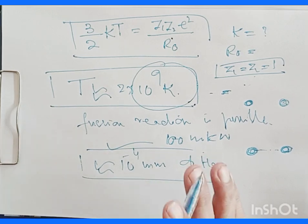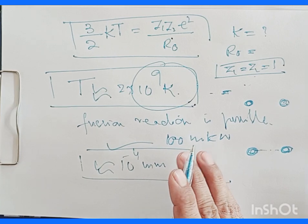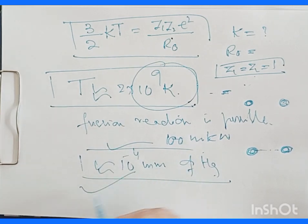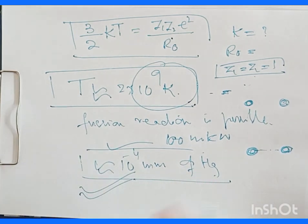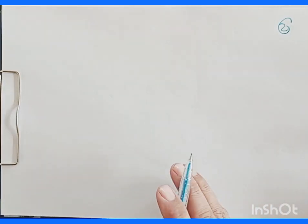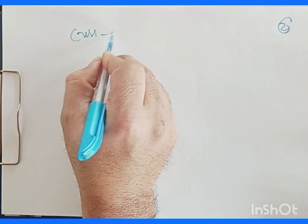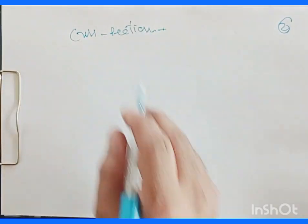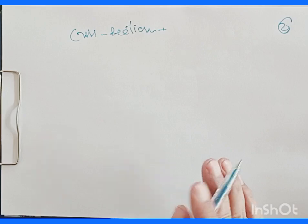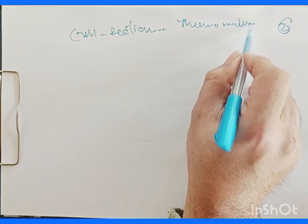A higher degree of ionization is possible if we start with very low pressures. In order to get an idea regarding the power output from nuclear fusion, it is necessary to have data on cross sections — a very important parameter — and the cross sections of the thermonuclear processes.